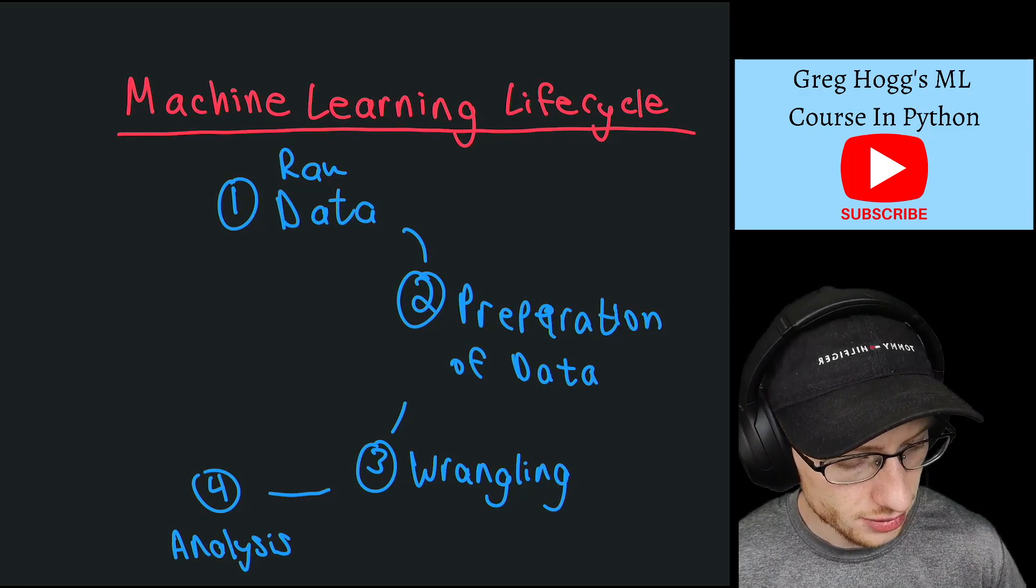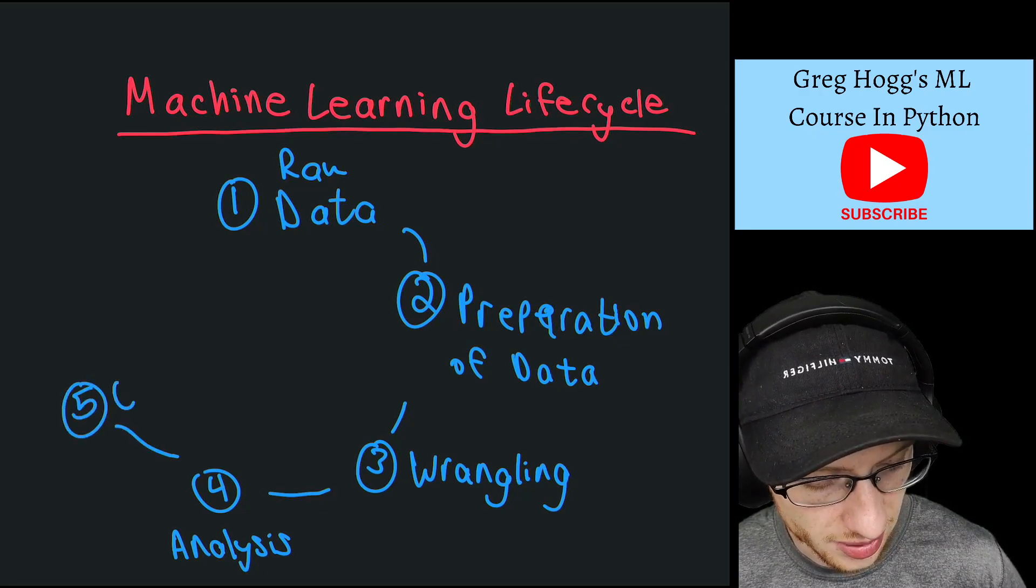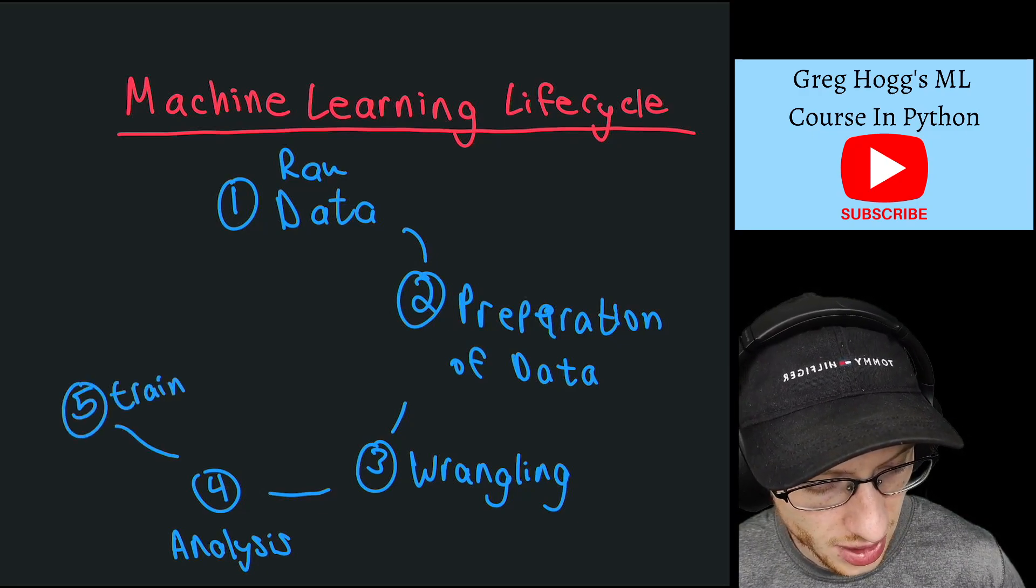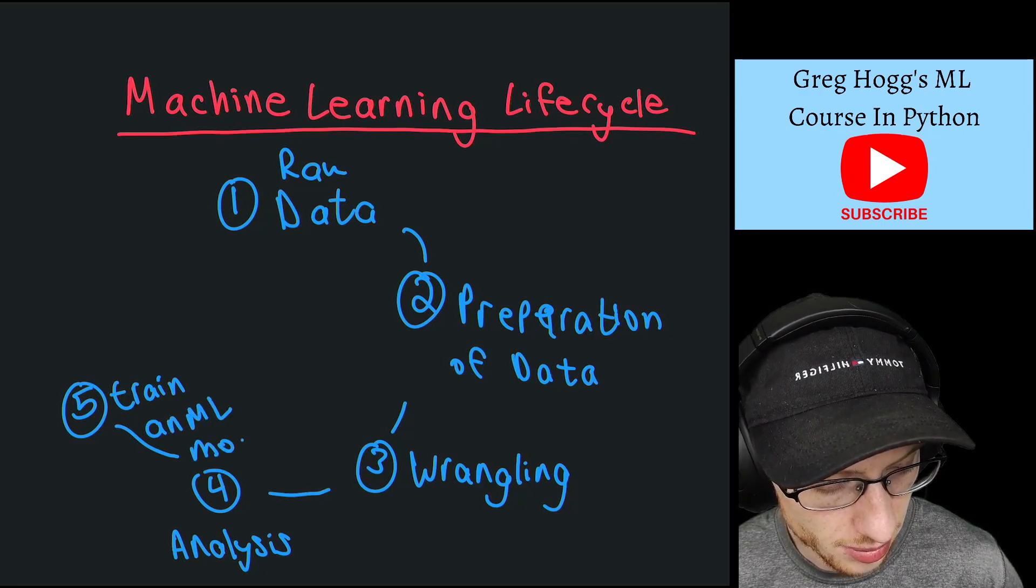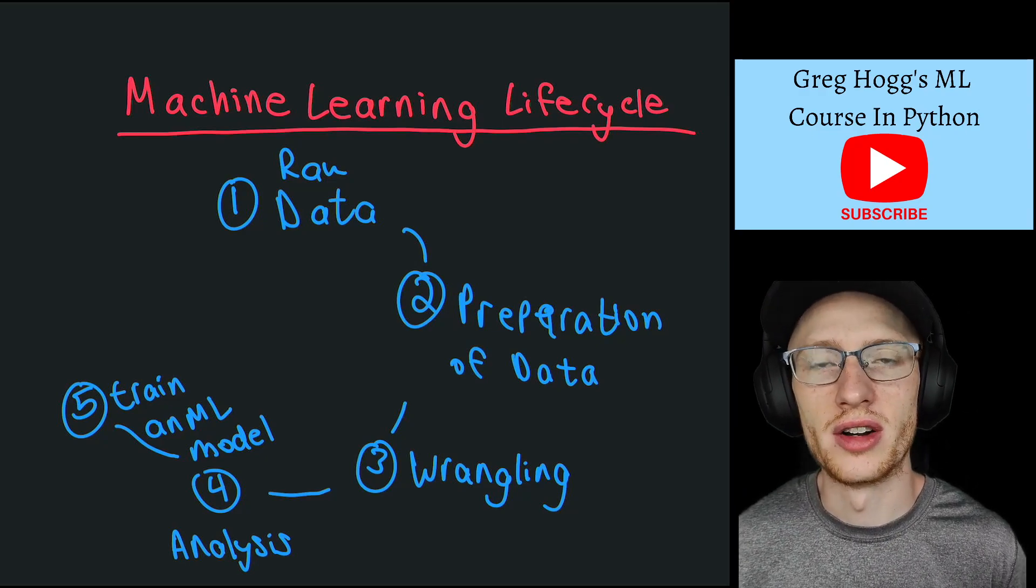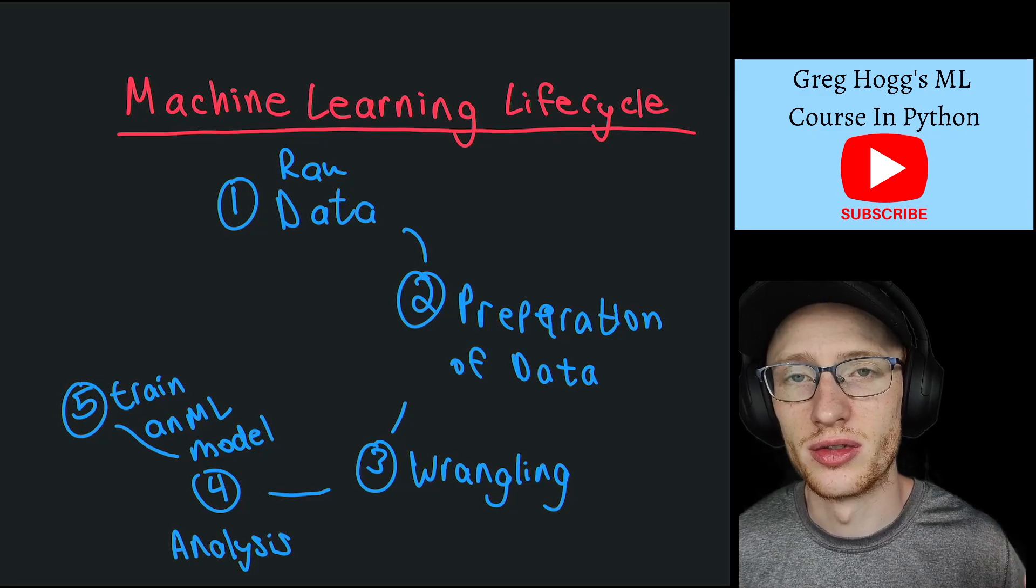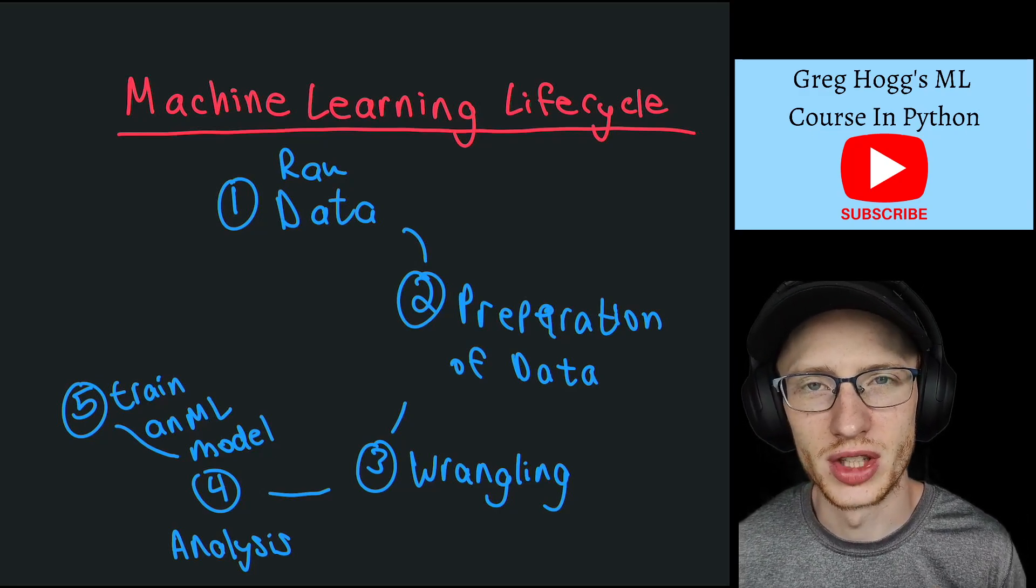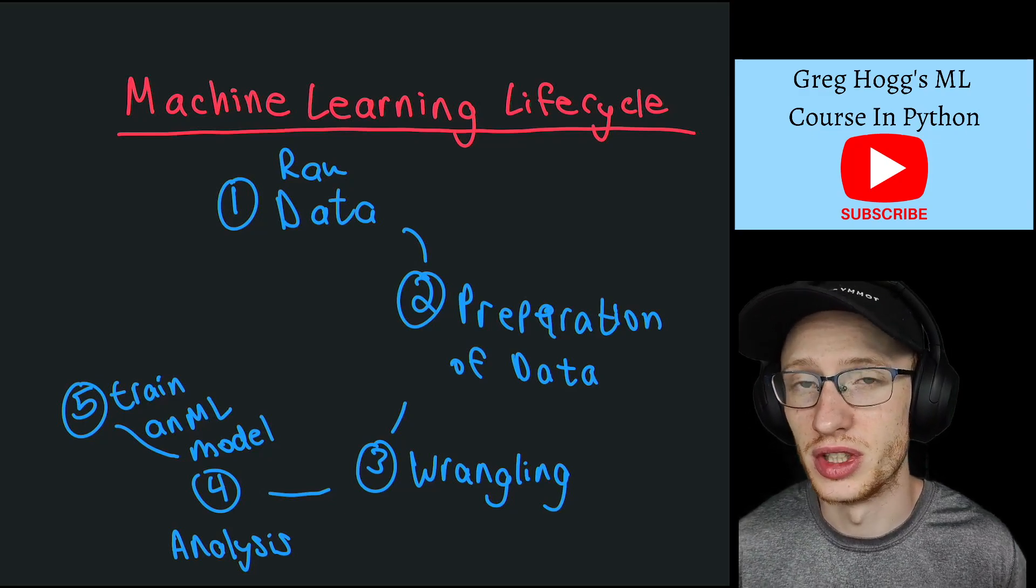They generally imply step five here, which is train, train an ML, so train a machine learning model. So there's a lot of varieties as to what this is. Maybe its job again is to forecast the weather, so we have a specific algorithm that does that with this data that is relevant to predicting the weather.